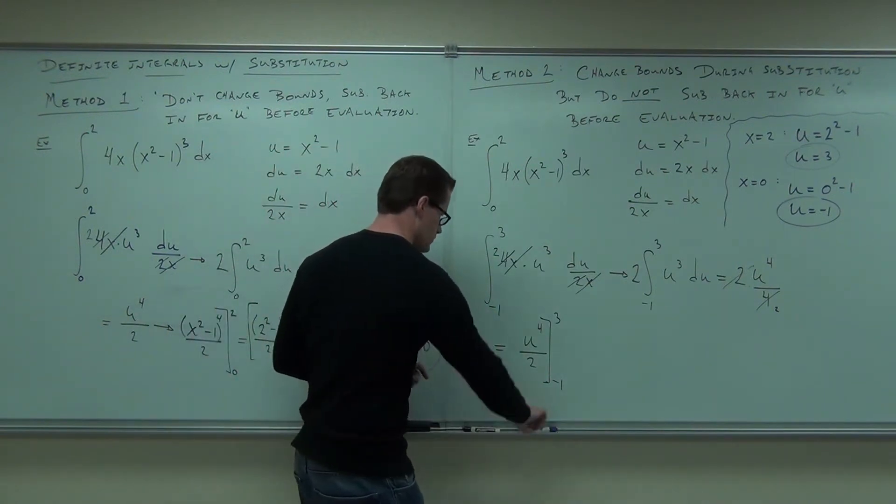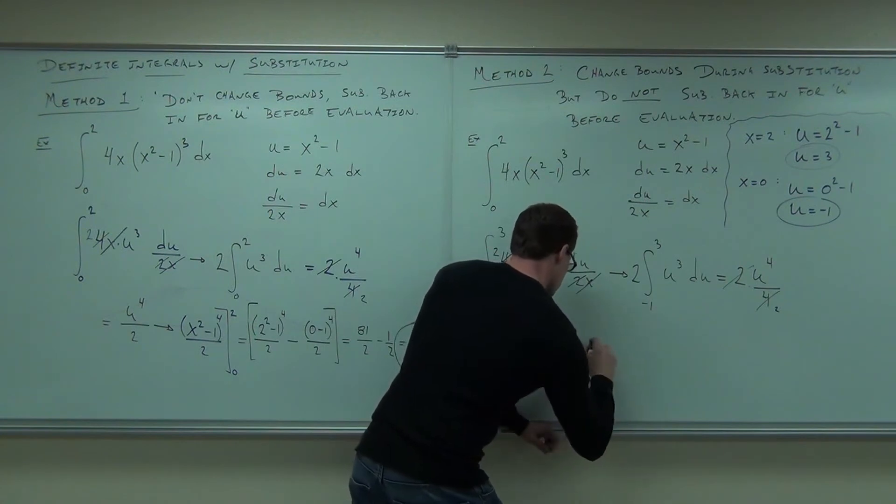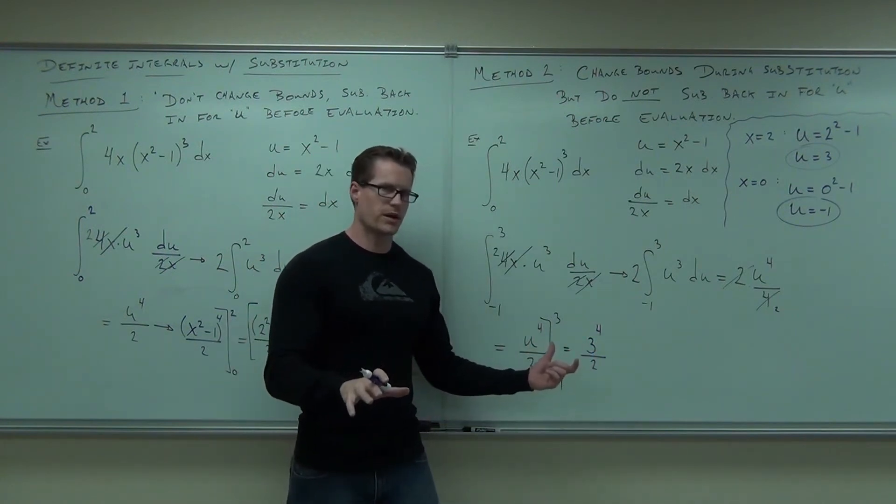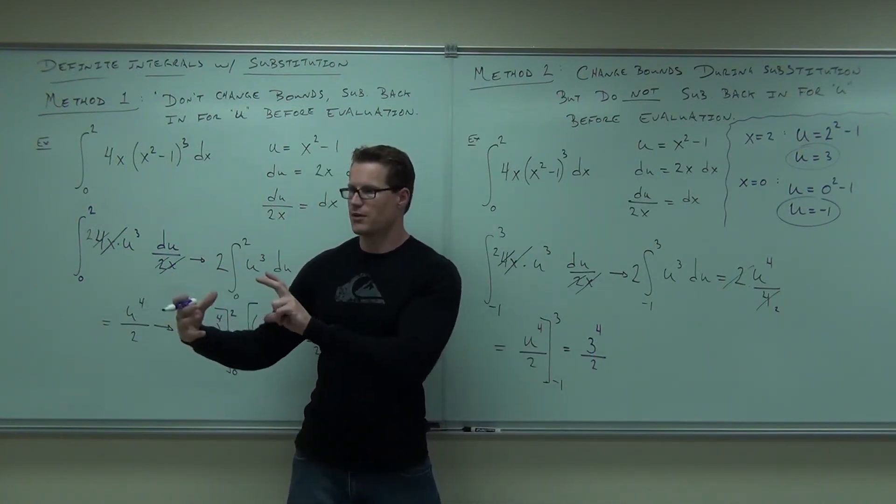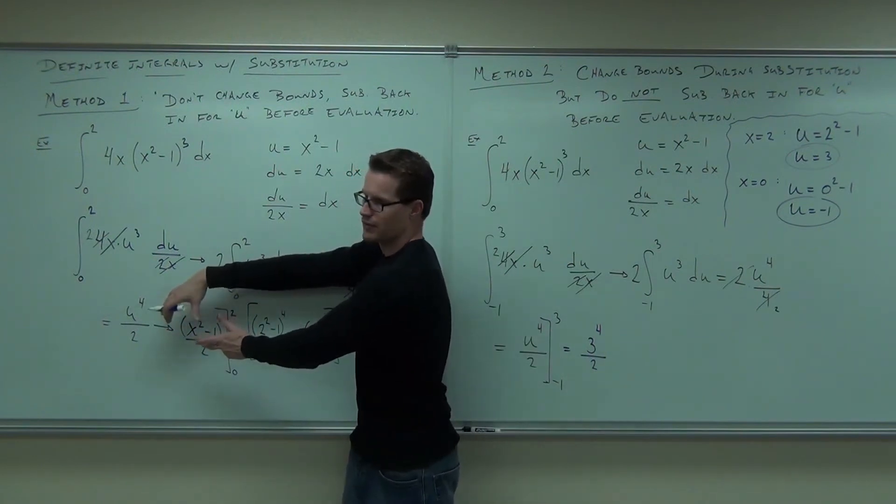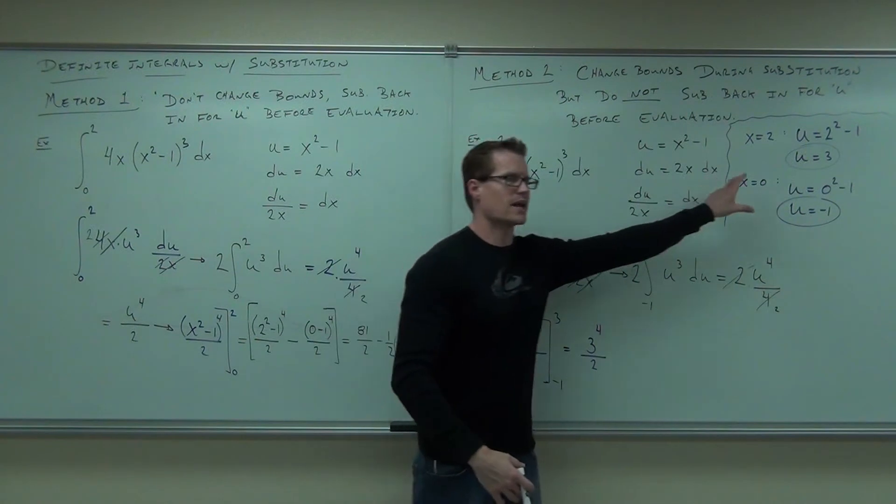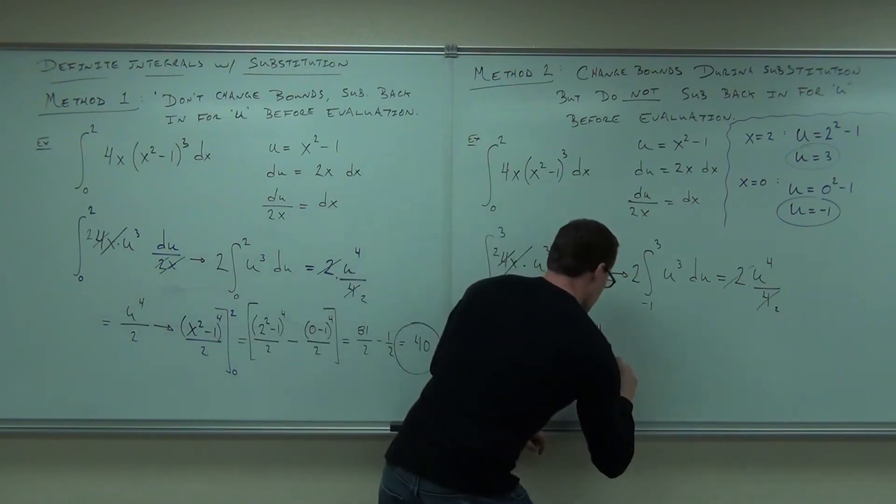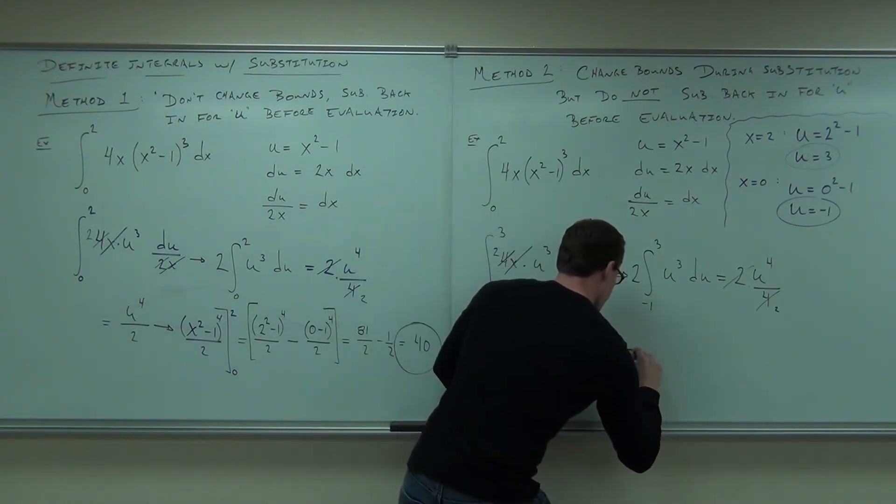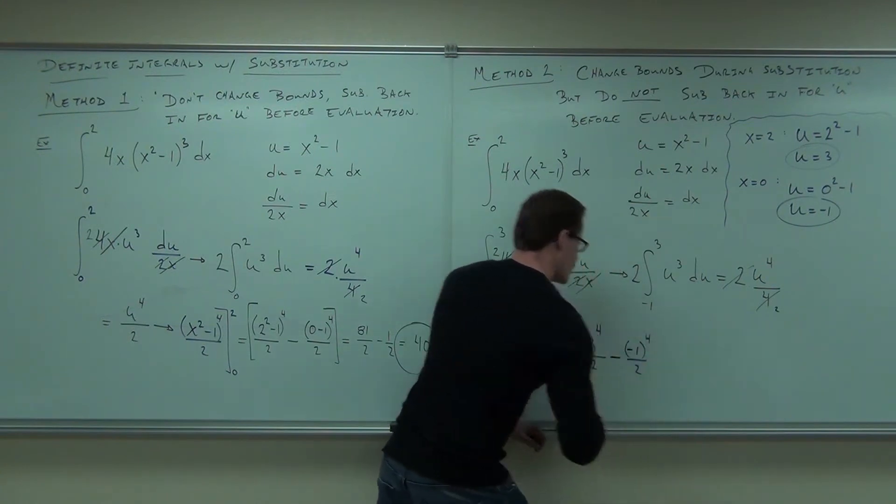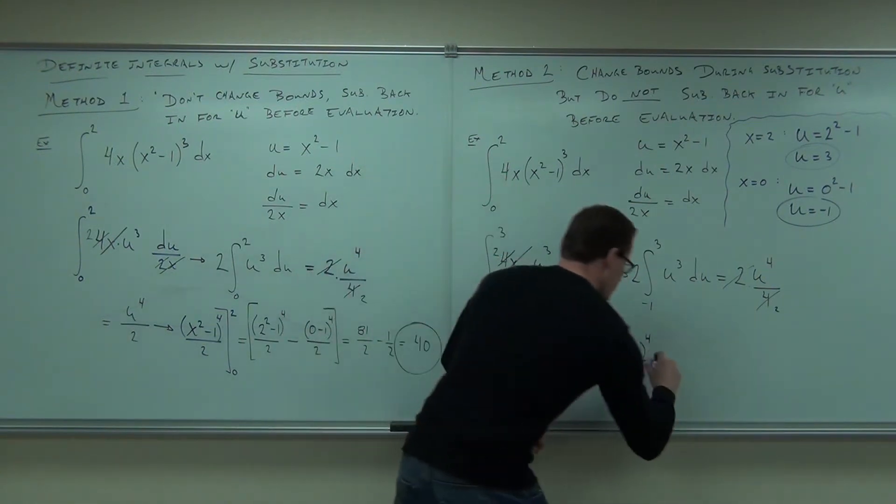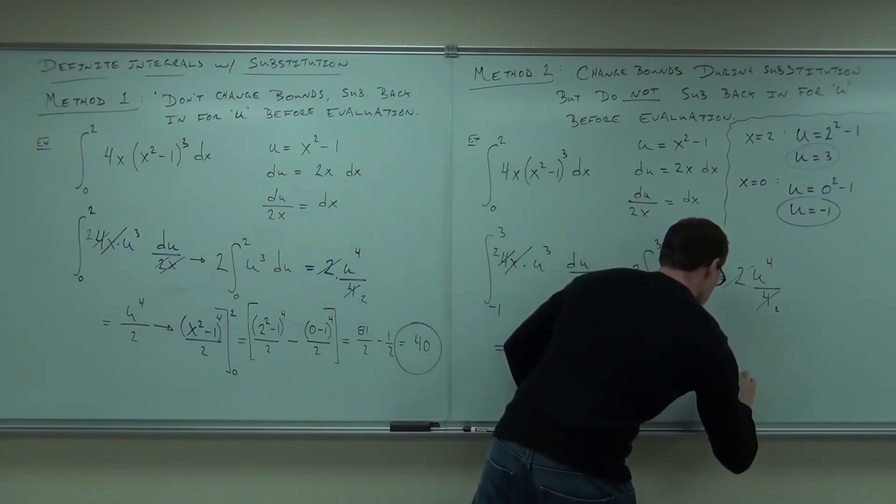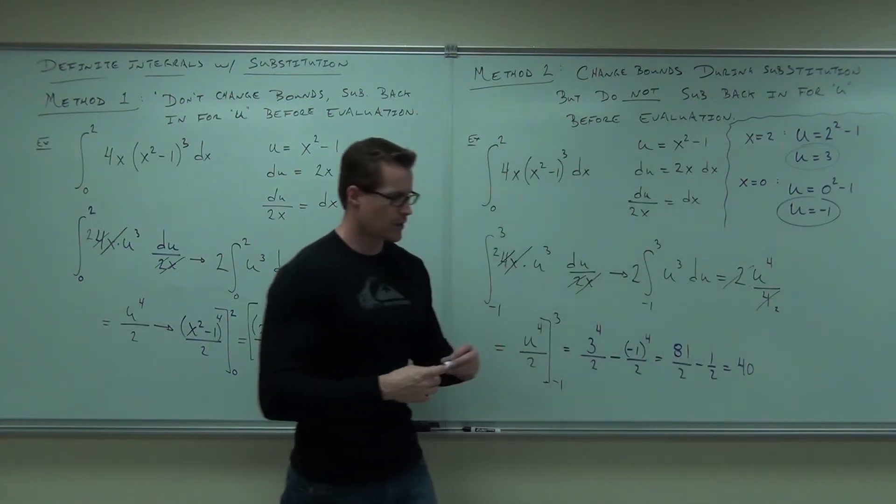So let's try that. Hopefully you get the same answer. It makes it so your evaluation is just a little bit simpler, by the way. Because you have this function's gone right now. You don't have to plug that in and then do all the math. Basically, you just do it ahead of time. You're still doing it, though. It's just kind of set aside for you up here, which I suppose is nice. 3 to the 4th over 2 minus negative 1 to the 4th over 2. Well, what that's going to be is 81 over 2 minus 1 half. And again, that's 40.